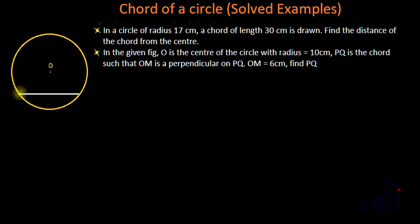So suppose this is the center O and this is the chord AB. We are given the length of the chord, that means this distance is 30 centimeters, and the radius of the circle is 17 centimeters. That means if I draw line AO, this length is 17 centimeters. Then we have to find the distance between the chord and the center.